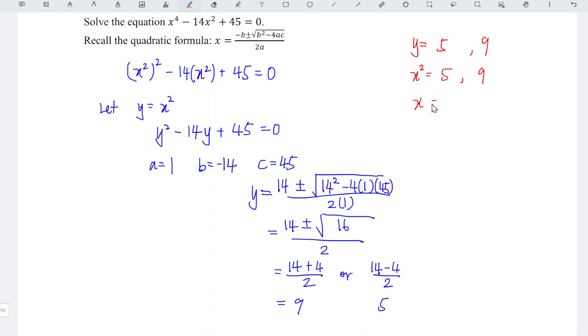To find x, we take the square root of both sides. Remember to include plus and minus. So the solutions for x are plus or minus square root of 5, and plus or minus 3.